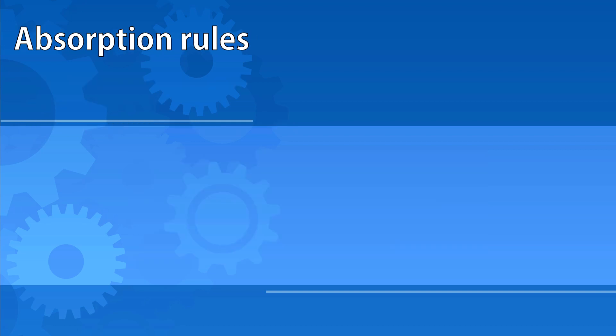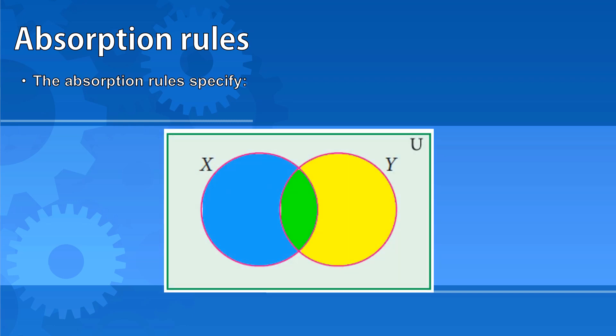Absorption rules let us simplify statements. If something is either in x or in the area represented by x AND y — which is the green section, totally within circle x — then it's just the same as saying it must be inside x. Similarly, if something is in either x or the area covered by x OR y, the only logical place it can actually be is within circle x.